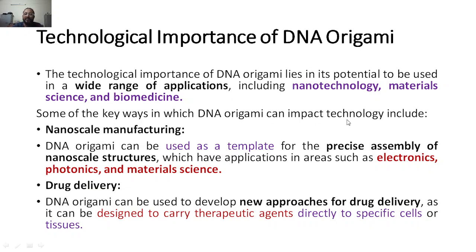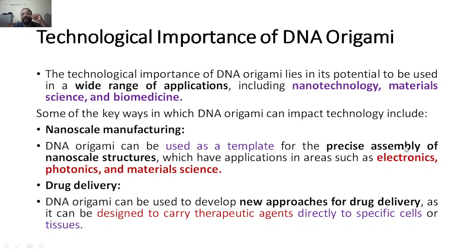Some of the key ways in which DNA Origami can impact technology: first, nanoscale manufacturing. We can create nanostructures of whatever size we want — 10 nanometer, 29 nanometer, 100 nanometer diameter. DNA Origami can be used as a template for precise fabrication of nanostructures, which have applications in various fields — electronics, photonics, materials science. For example, quantum dot FETs and graphene FETs are nanostructure-based devices.